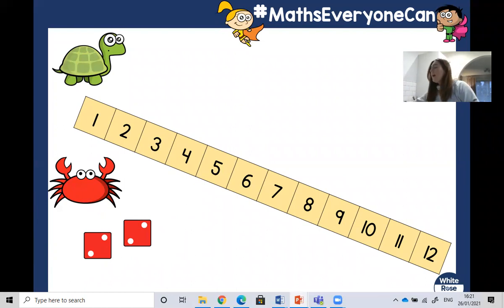Now, if you want, you can use your tens frame that is in your pack to help you with this. For example, there is two on one dice, two on the other. Put them on your tens frame. How many altogether? One, two, three, four. So therefore, the crab gets to move four places.